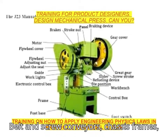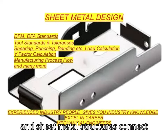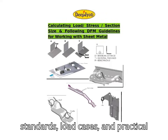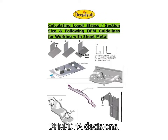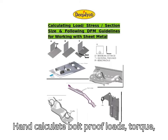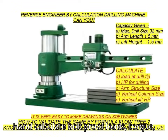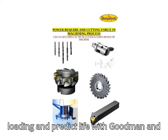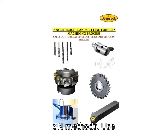Belt and screw conveyors, chassis frames, and sheet metal structures — connect standards, load cases, and practical DFM and DFA decisions. Hand calculate bolt-proof loads, torque, PCD, size welds under combined loading, and predict life with Goodman and S-N methods.